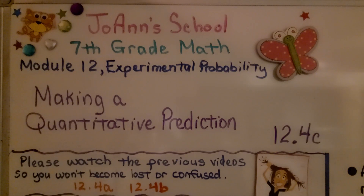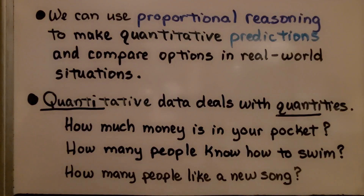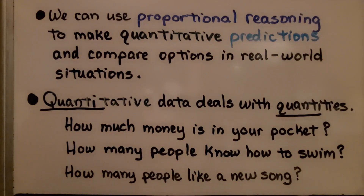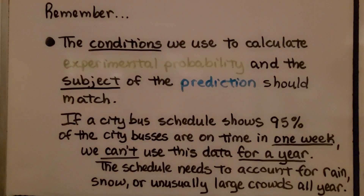Lesson 12.4c: Making a Quantitative Prediction. We can use proportional reasoning to make quantitative predictions and compare options in real-world situations. Quantitative data deals with quantities — how much money is in your pocket, how many people know how to swim, how many people like a new song. Remember, the conditions we use to calculate experimental probability and the subject of the prediction should match.